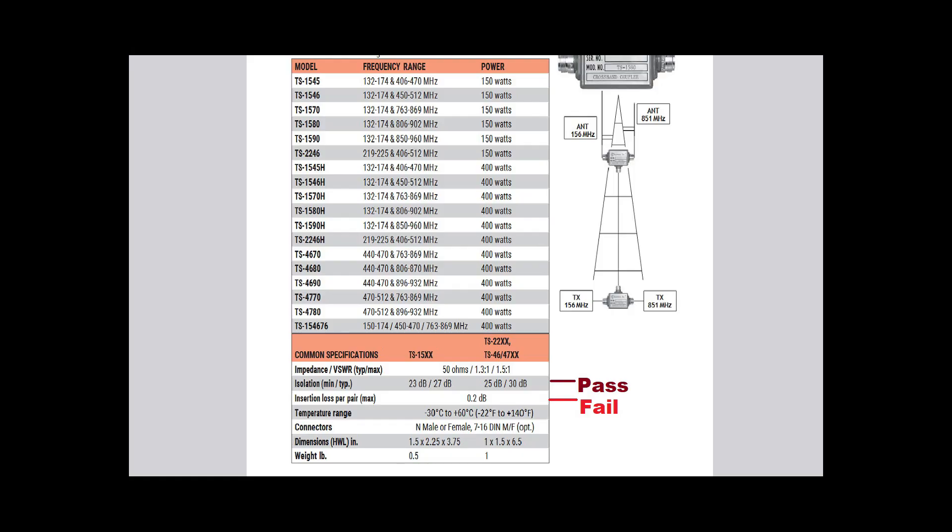Well like paternity court, the results are in. The device falls into the isolation window of 23 to 27 dB of isolation. However, the device falls outside of the insertion loss window or specification and the specification is two tenths of a dB per pair. Our device under test had an observed average insertion loss of four tenths of a dB for one device.